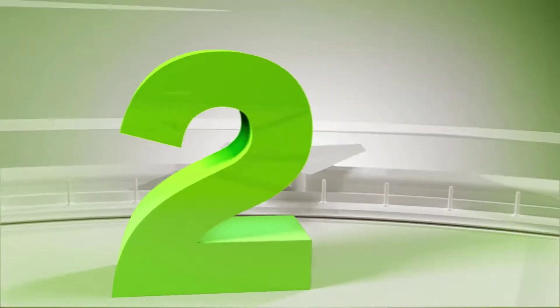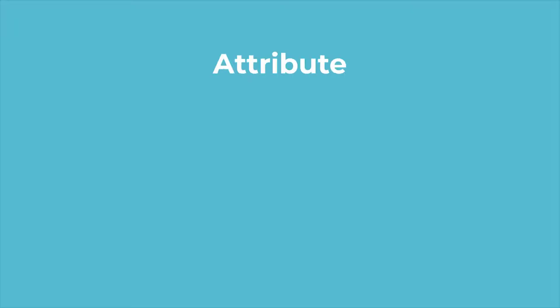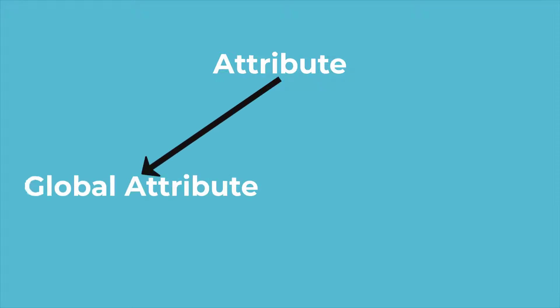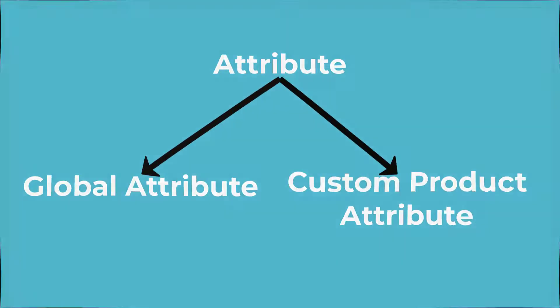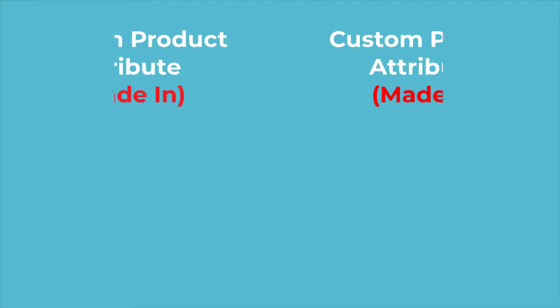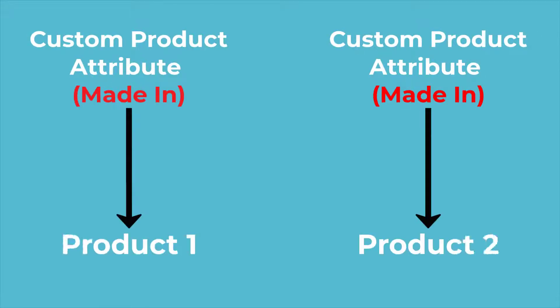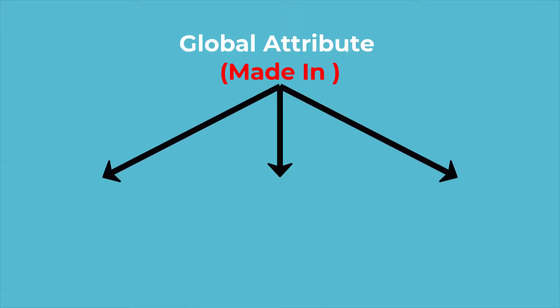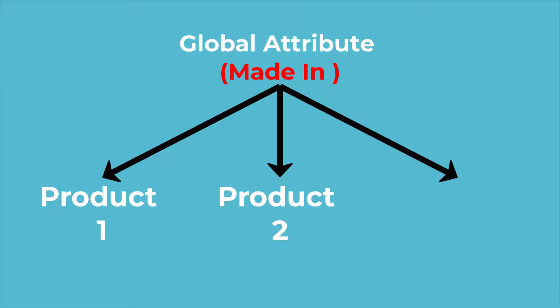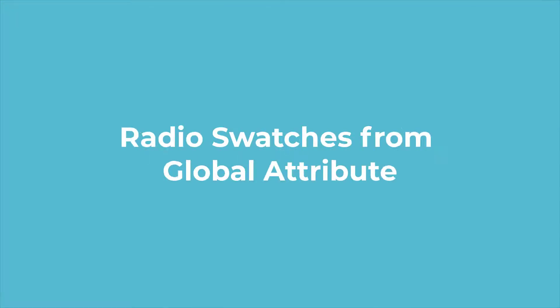Product attributes can be created from both global attributes and custom product attributes. For manual or custom product attributes, you have to create the same attribute and its variations for each product again and again — meaning one attribute can only be allocated to a single product. But when you create global attributes, you can assign them to multiple products. Today I will show you the process of creating radio swatches from the global attribute.